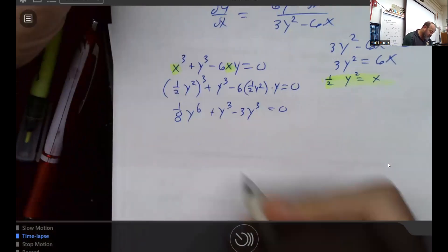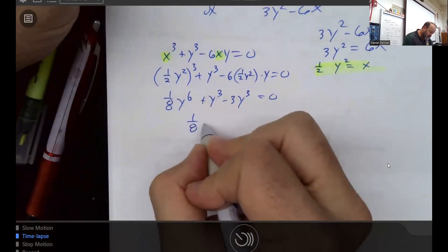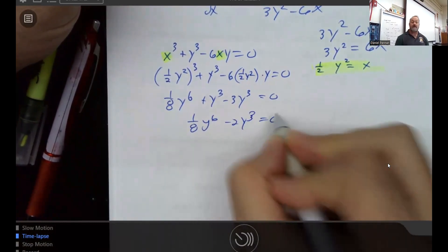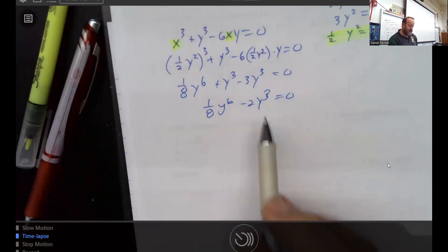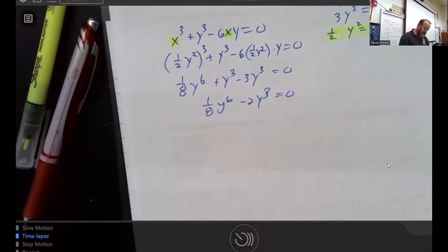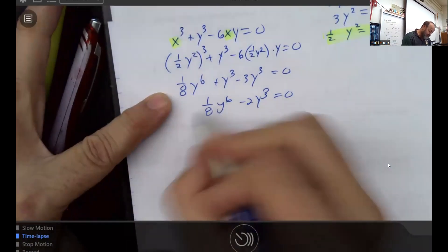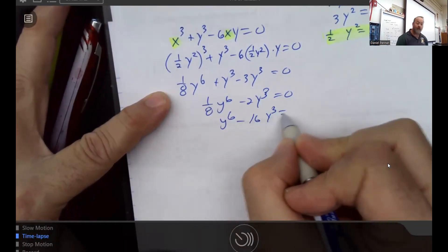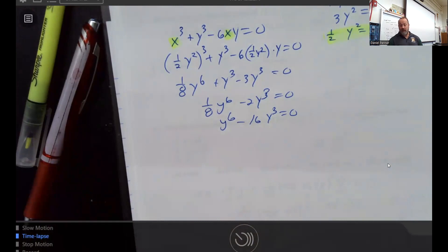A little bit of combination of like terms here. I don't like this one-eighth, so I'm going to multiply everybody by 8. I just like that better. And so in order to solve anything equal to 0, remember we always factor. And the first step to factoring is greatest common factor.